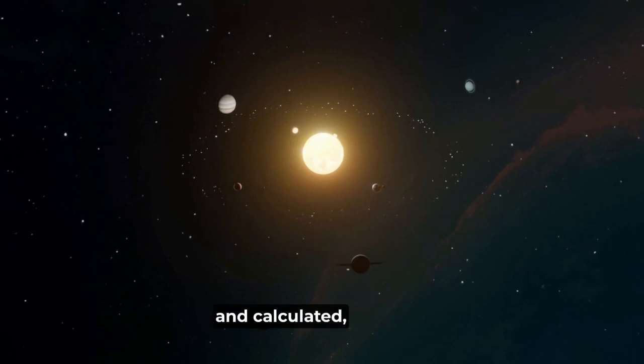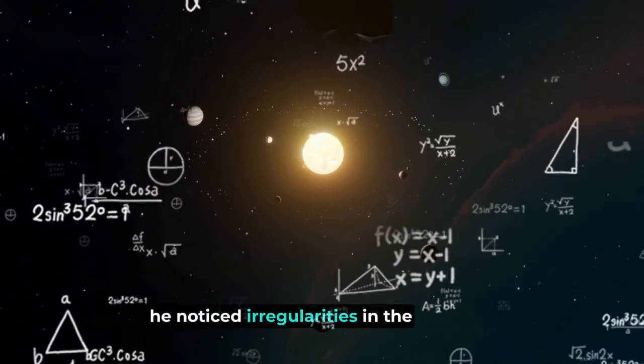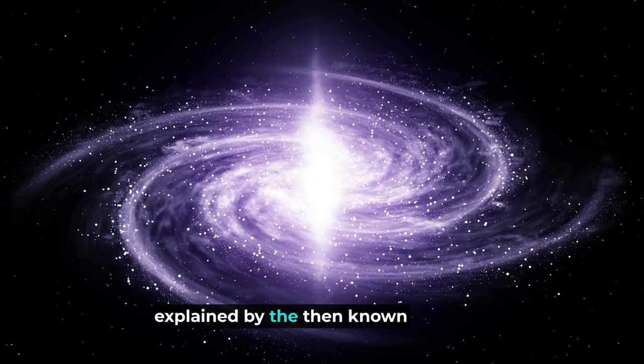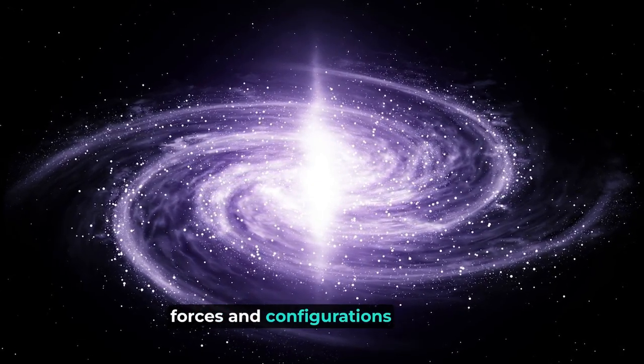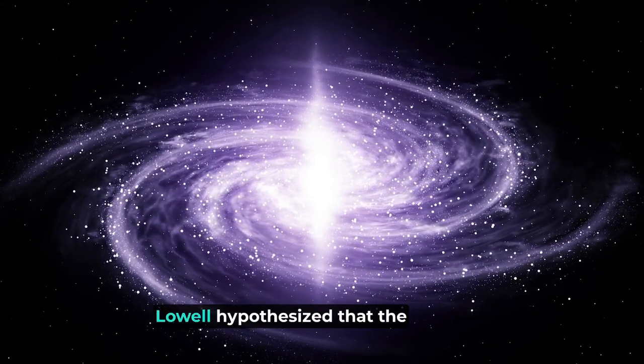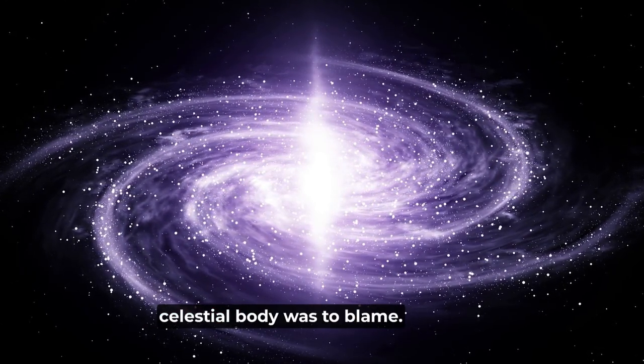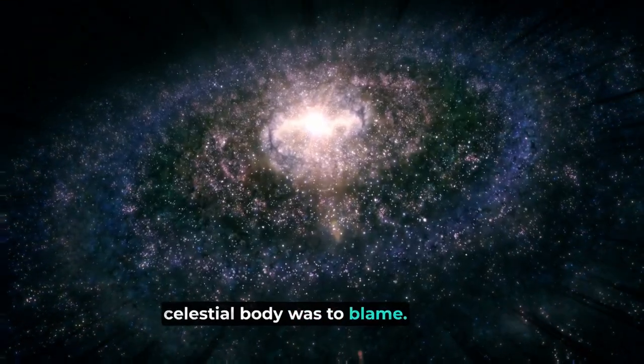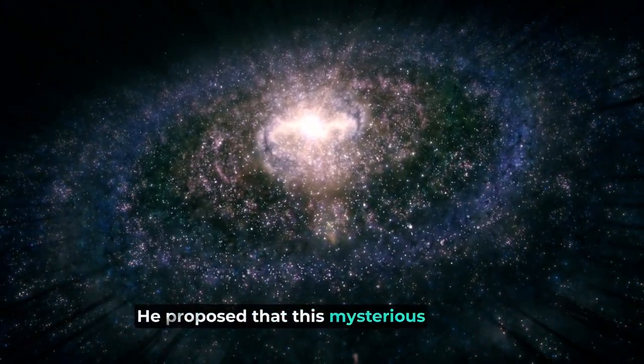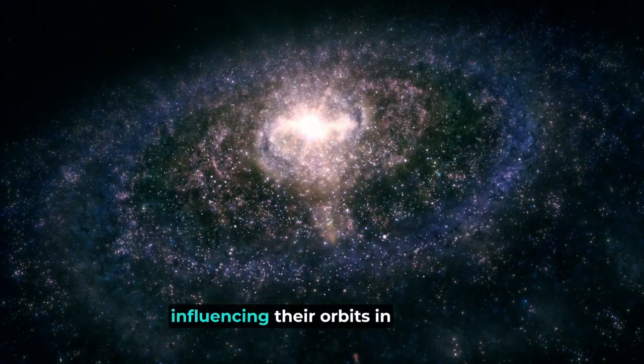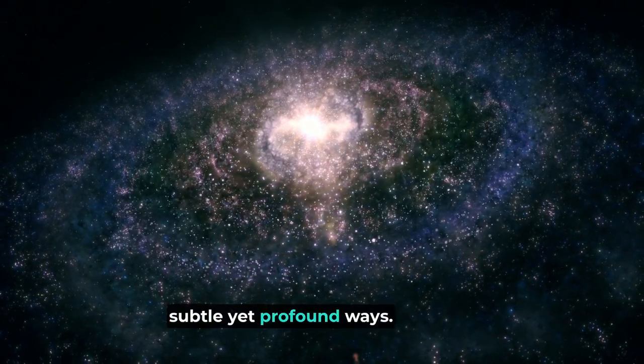As Lowell charted and calculated, he noticed irregularities in the orbits of Uranus and Neptune. These anomalies could not be explained by the then-known forces and configurations of the solar system. Lowell hypothesized that the gravitational tug of an unseen celestial body was to blame. He proposed that this mysterious planet was shepherding the outer planets through its gravitational pull, influencing their orbits in subtle yet profound ways.